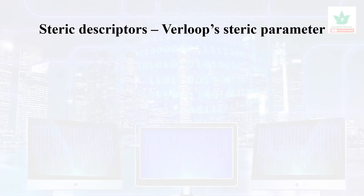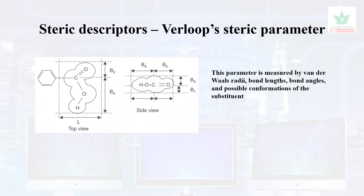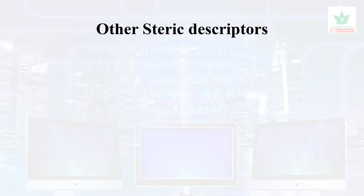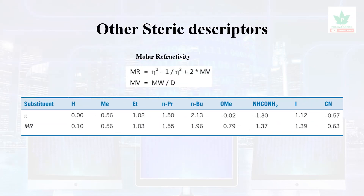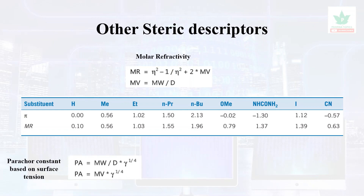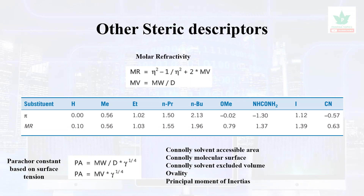Verloop's steric parameter or descriptor involves topological features — bond angle, bond length, possible conformations, and substitution. Molar refractivity is also a steric descriptor. Additional steric descriptors include the parachor constant, Connolly solvent accessibility area, Connolly molecular surface area, Connolly solvent excluded volume, ovality, and principal moment of inertia.